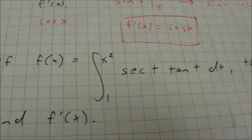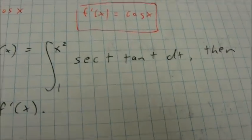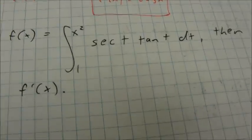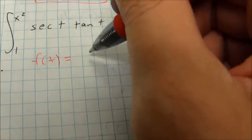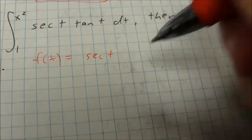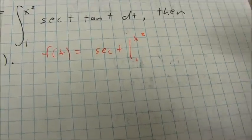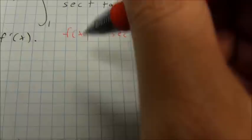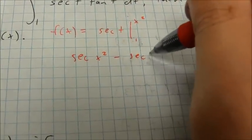Take a look at the second example. Now it's the integral from 1 to x squared of secant of t tangent of t dt. Once again, you could technically rewrite that function. f of x is going to be the integral of secant of t tangent of t — that of course is just secant of t. Then I substitute from 1 to x squared, and according to the Fundamental Theorem, that's going to give me secant of x squared minus secant of 1.